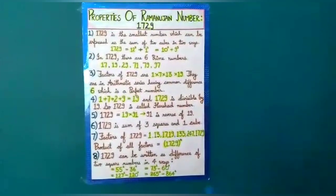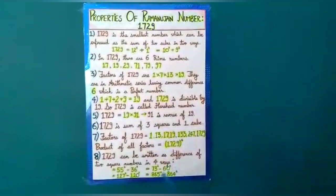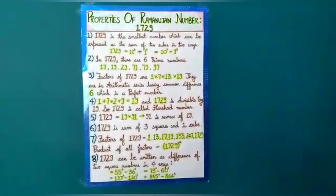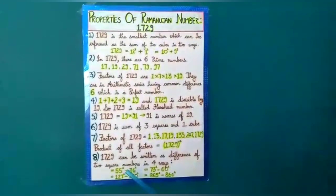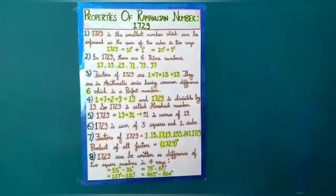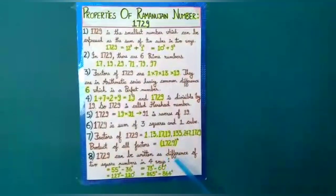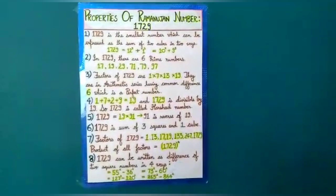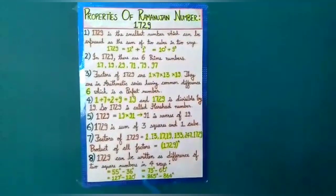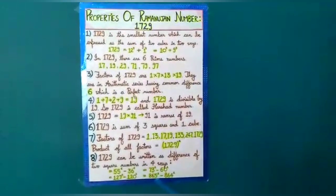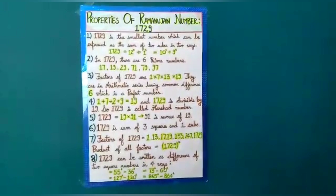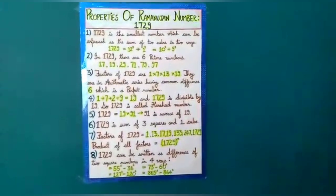And lastly, 1729 can be written as difference of two square numbers in four ways. Let's look here: 55 to the power 2 minus 36 to the power 2, 73 to the power 2 minus 60 to the power 2, 127 to the power 2 minus 120 to the power 2, and 865 to the power 2 minus 864 to the power 2 equals 1729. That's all. Thank you very much.